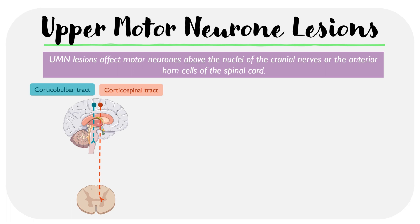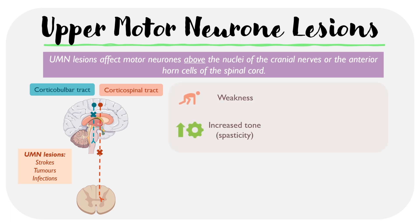To simplify this, an upper motor neuron lesion means there's an issue with either the corticobulbar tract or the corticospinal tract. Examples of things which can go wrong with each of these tracts include strokes, tumors, and infections. These issues basically impair the transmission of signals from the upper motor neurons, which can lead to an array of different symptoms including weakness, increased tone or spasticity, increased reflexes or hyperreflexia, and outgoing plantars.